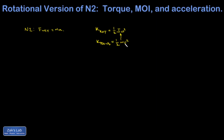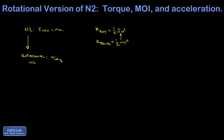Rotational velocity instead of ordinary velocity is also in that formula. So if I want a rotational version of Newton's second law — I'll call it rotational N2 — instead of F net I use the net torque experienced by an object, instead of mass I use the moment of inertia, which is the resistance to angular acceleration and tells you how hard it is to change how fast something is rotating. And I use alpha, the angular acceleration.